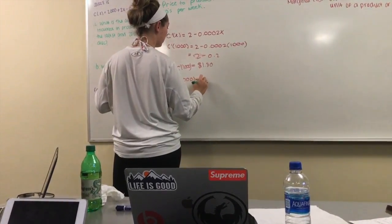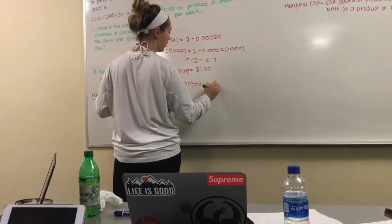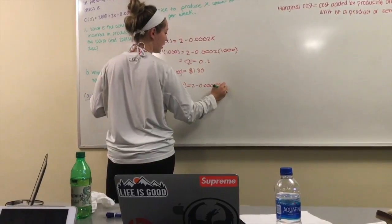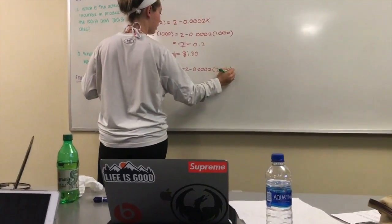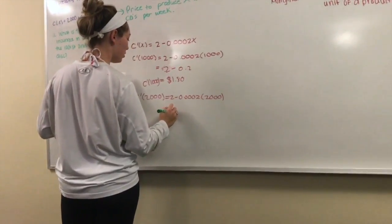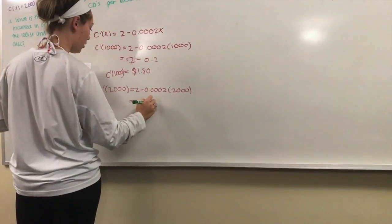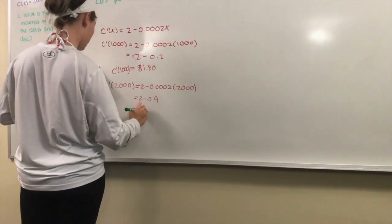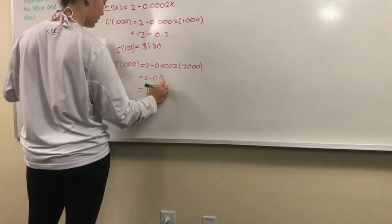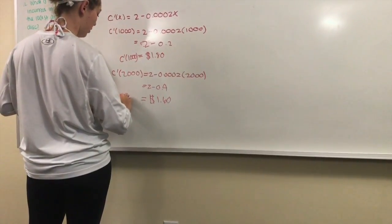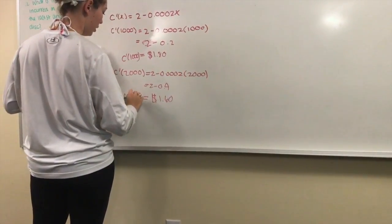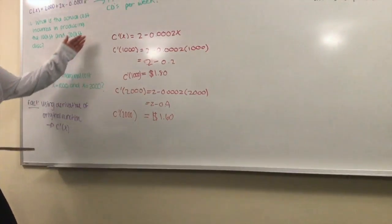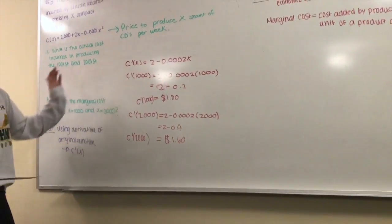And you're going to do the exact same thing for 2,000. So C'(2,000) equals 2 minus 0.0002 times 2,000 which equals 2 minus 0.4 which equals $1.60. So C'(2,000) equals $1.60. So these are the marginal costs for 1,000 and 2,000.